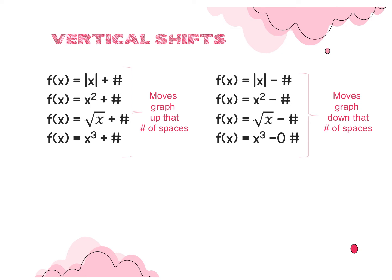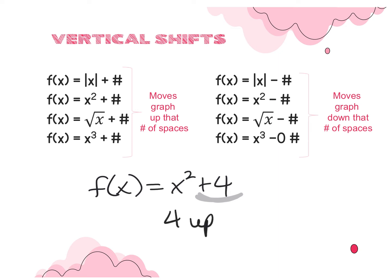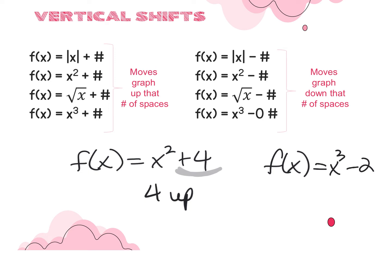Whatever number is being added or subtracted to an absolute value, square root, cube, or quadratic tells you how many units to move it — up if added, down if subtracted. Let's try two examples with shifts up and down. For f of x equals x squared plus 2: the plus 2 tells me to shift the graph up 2 units.